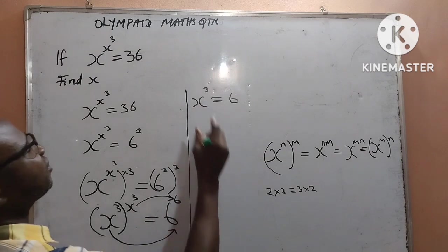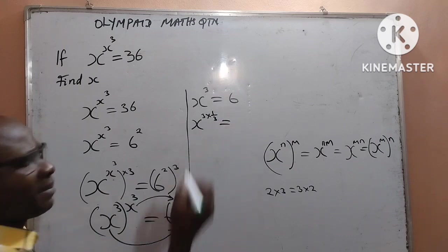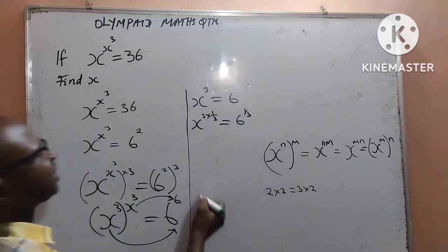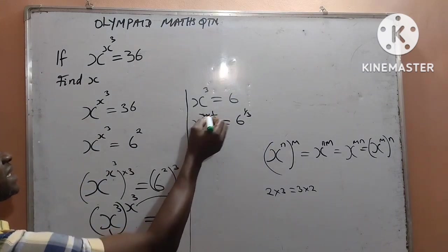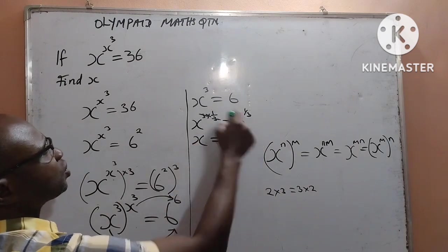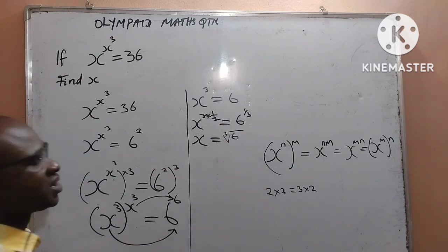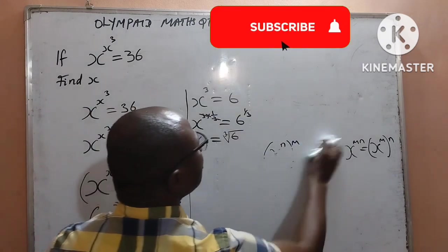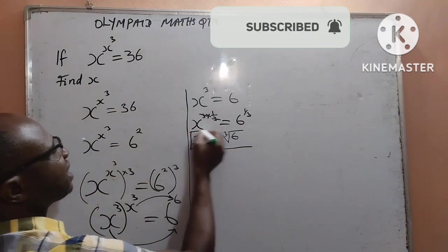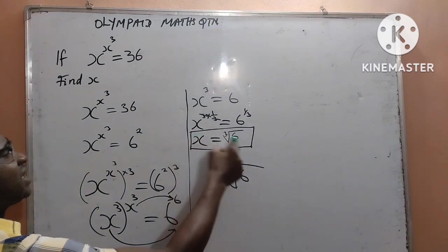To get the value of x, I raise both sides to the power of 1 over 3: x to the power of 3, multiplied by 1 over 3, equals 6 multiplied by the power 1 over 3. The 3s cancel out, giving me x equals 6 to the power of 1 over 3, which is the same as the cube root of 6. Final answer: x is equal to the cube root of 6.